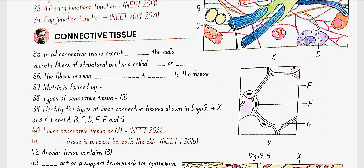Connective tissue: In all connective tissue except blood, the cells secrete the fibers of structural proteins called collagen or elastin. The fibers provide strength, flexibility, elasticity to the tissue. The matrix is formed by modified polysaccharide. Types of connective tissue: loose connective tissue, dense connective tissue, and specialized connective tissue.